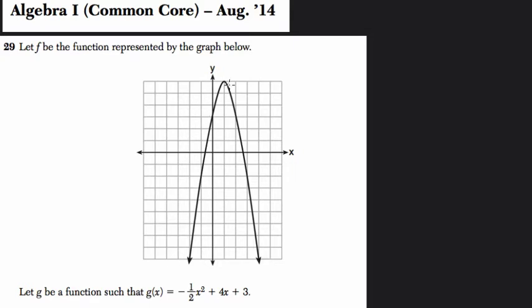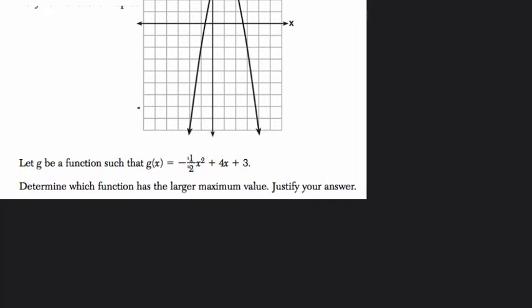So here's the graph of f, right? And then let g be a function. So g(x) is equal to negative one-half x squared plus 4x plus 3. Determine which function has a larger maximum value and then justify your answer.